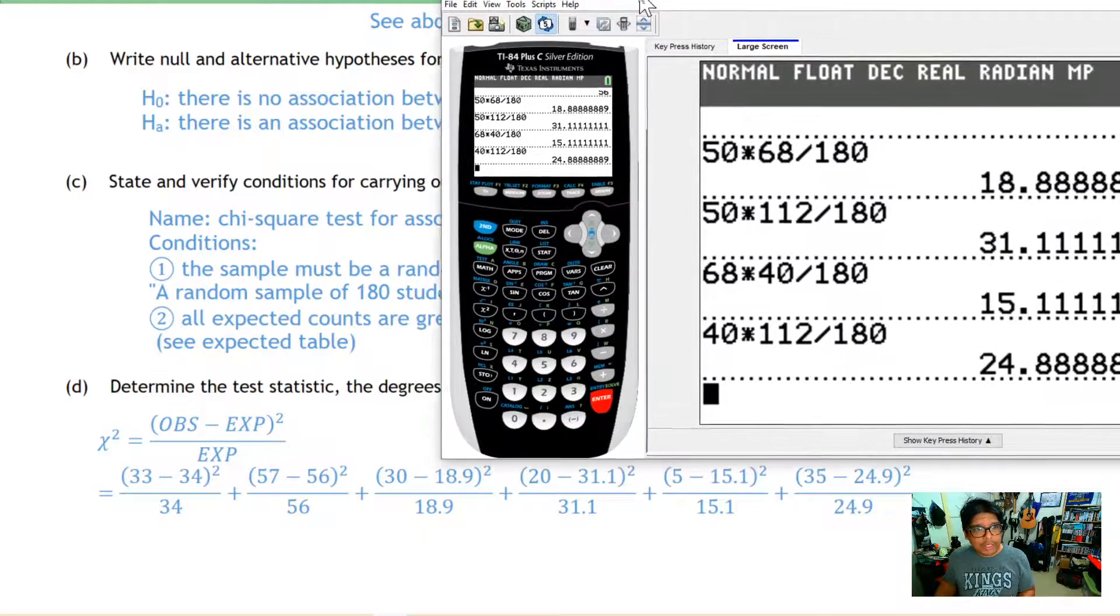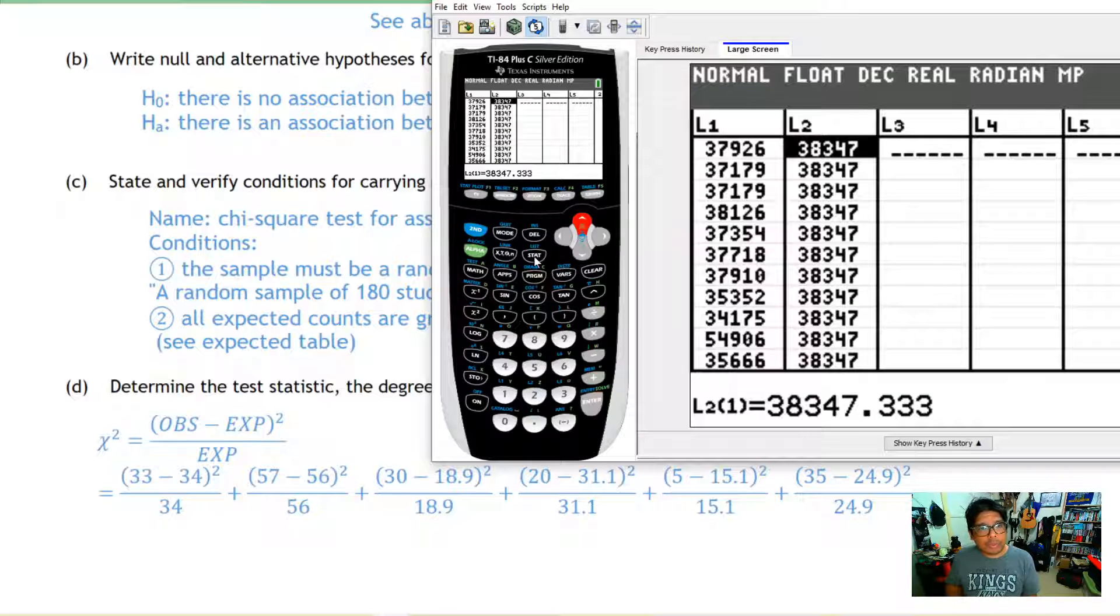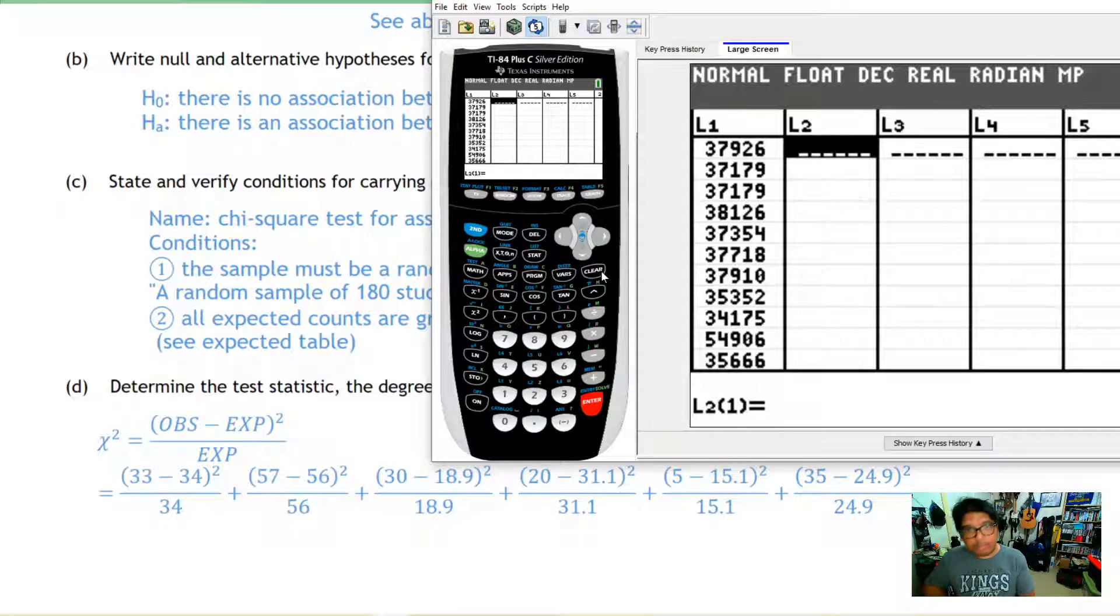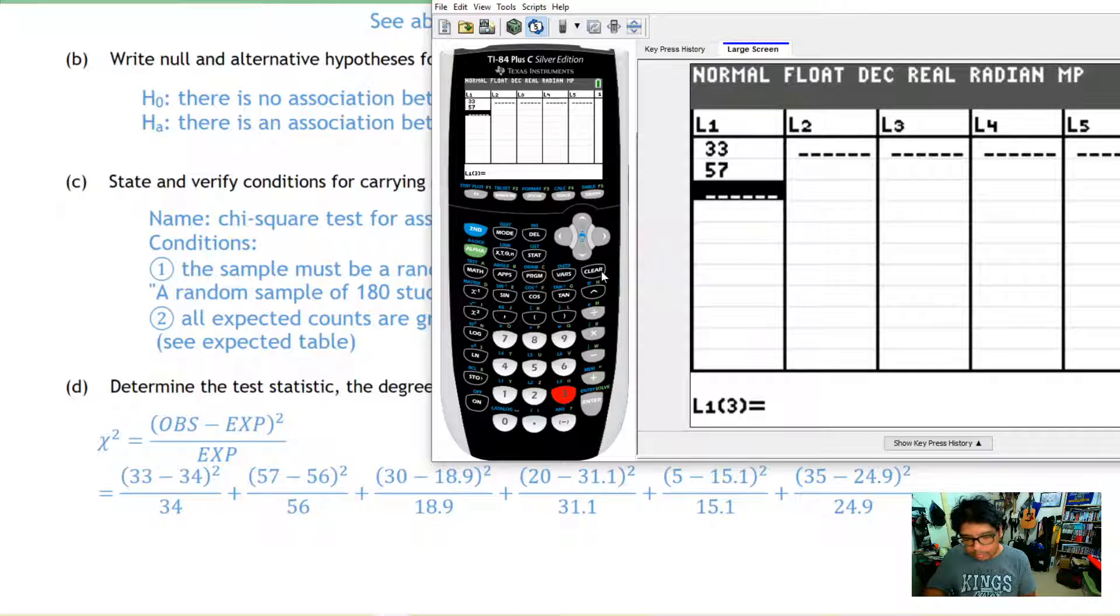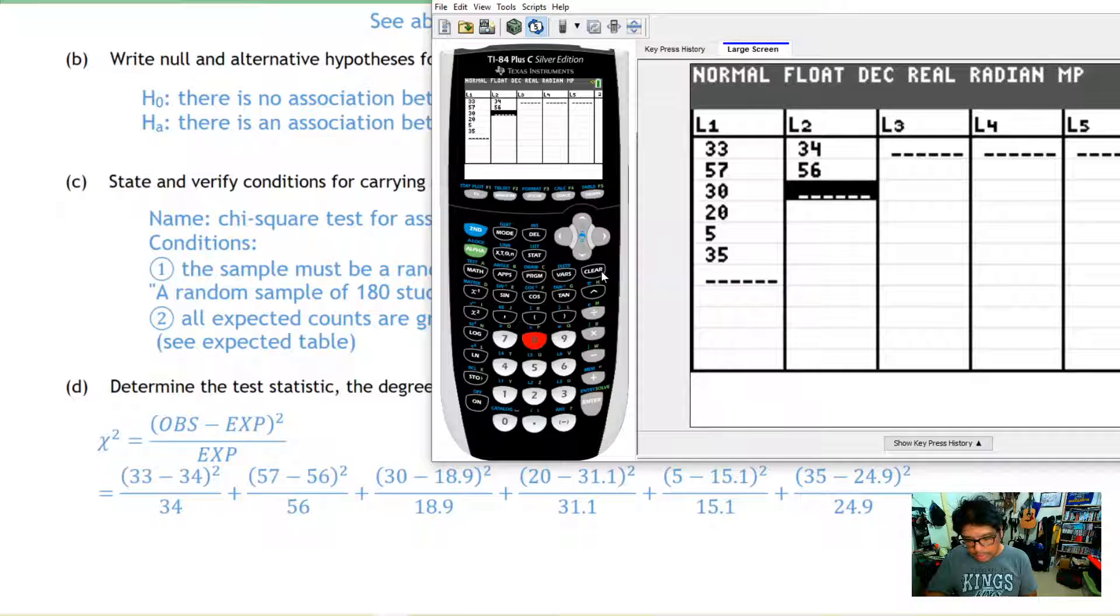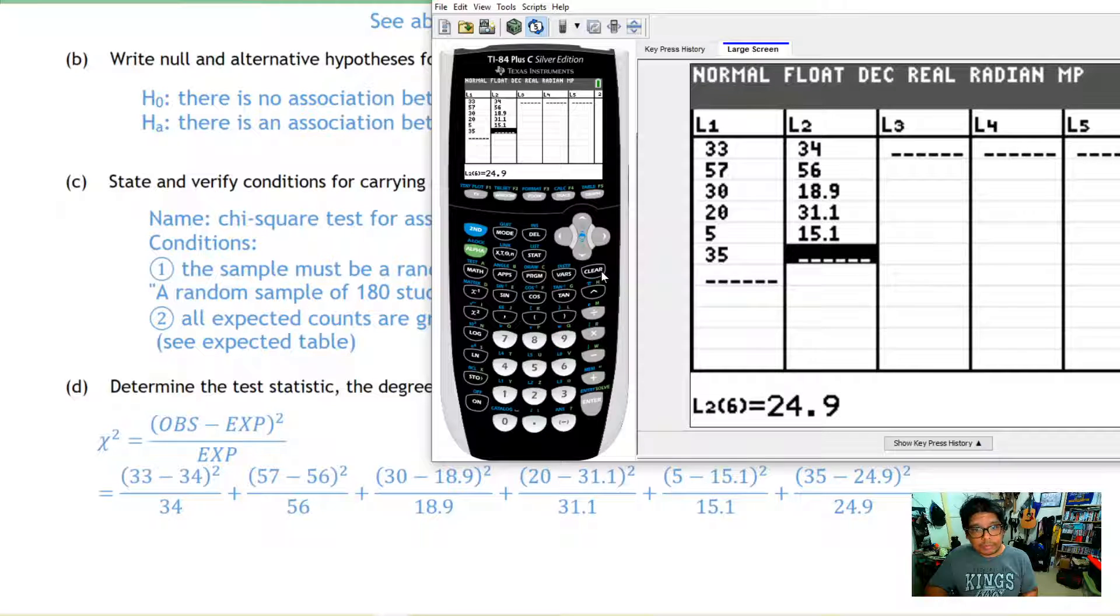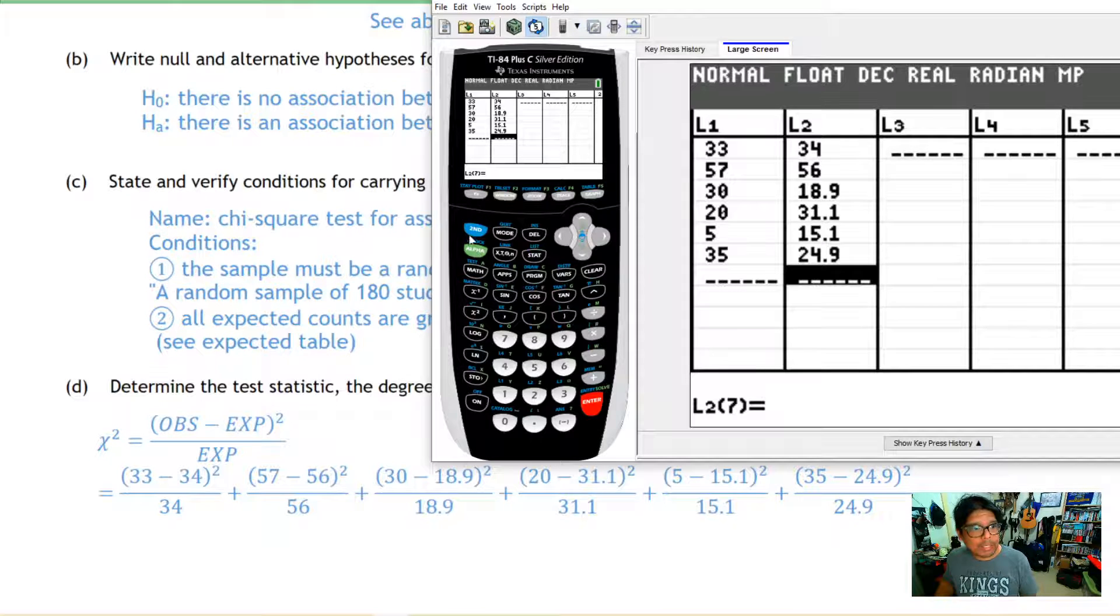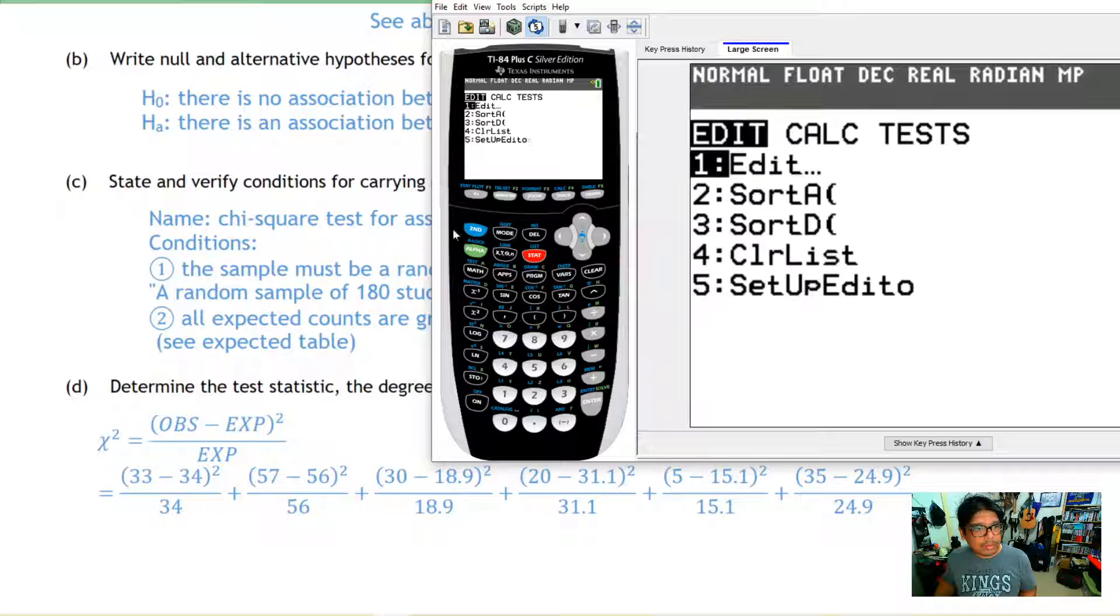Now that I have everything written out, I'm going to grab my calculator. We're going to do something very similar to what we did last time. We're going to head to our lists and clear them. I'm going to put the observed into L1: 33, 57, 30, 20, 5, and 35. Then I'm going to put the expected in list two: 34, 56, 18.9, 31.1, 15.1, and 24.9.